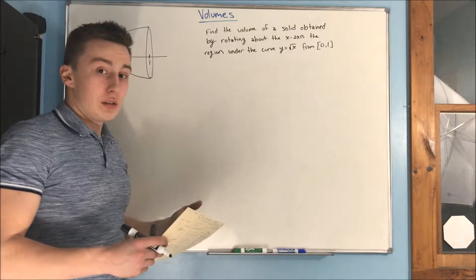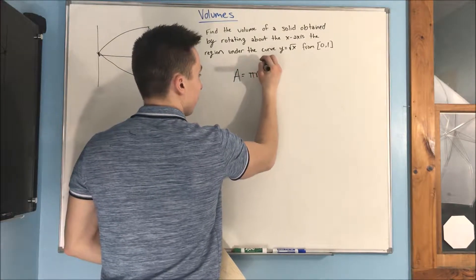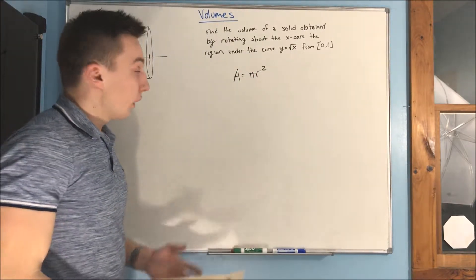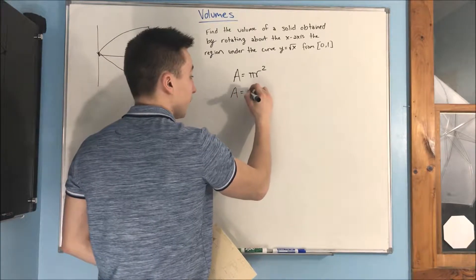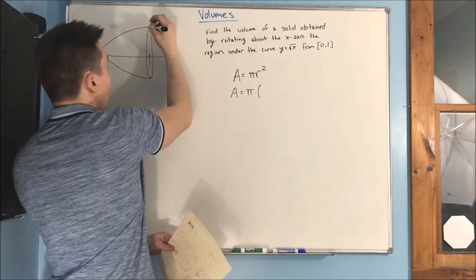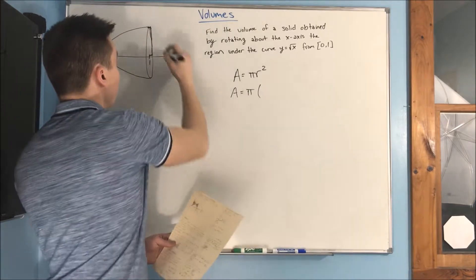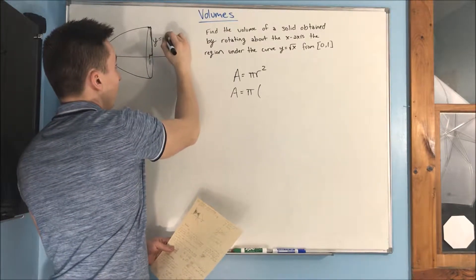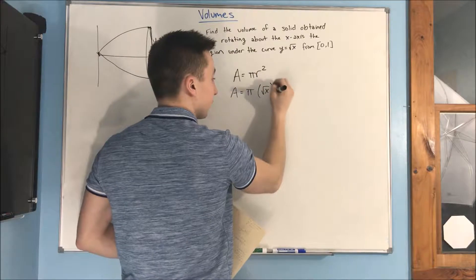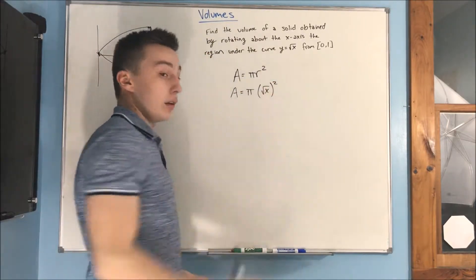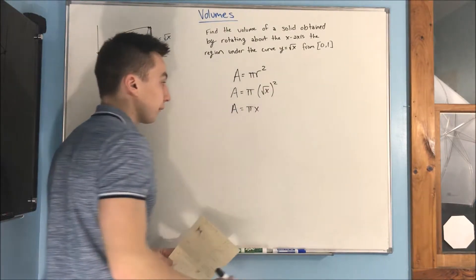What is our area here? The area of a circle is pi r squared. What's the radius? Our radius is going to be the height — and that height is rad x, which is the y value. So we can put in rad x and square that, because of course it's r squared. We're going to get an area of pi x.